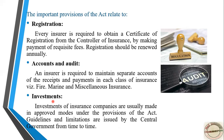The next provision is investment. This act tells insurance companies how to plan their investments. Investments of insurance companies are made in approved modes under the provisions of the act. Guidelines and limitations are issued by the central government from time to time. For example, if an insurance company has a surplus amount of say 100 crore and wants to invest in some companies, the central government will provide restrictions — such as how much percentage you can invest in one company.